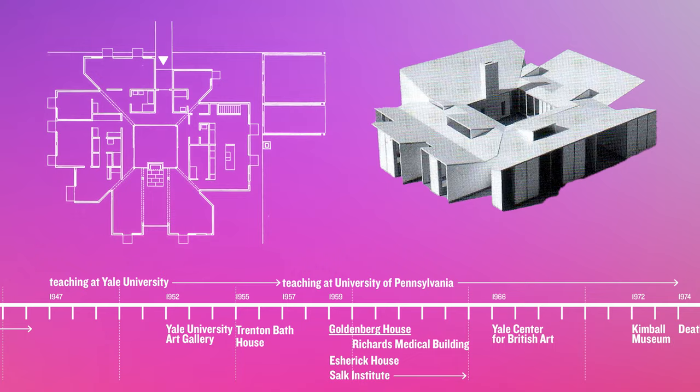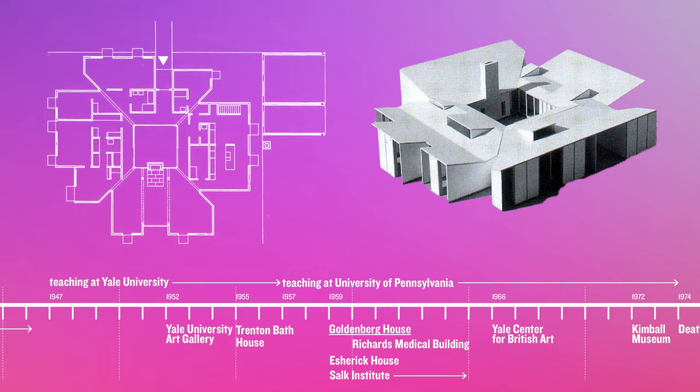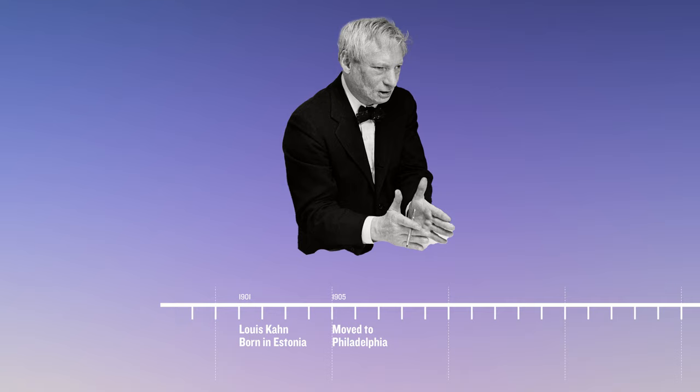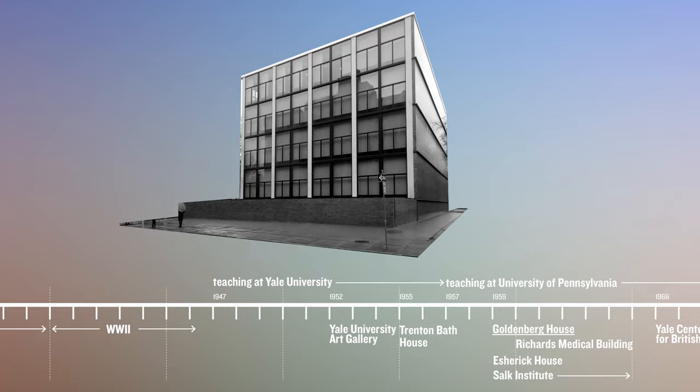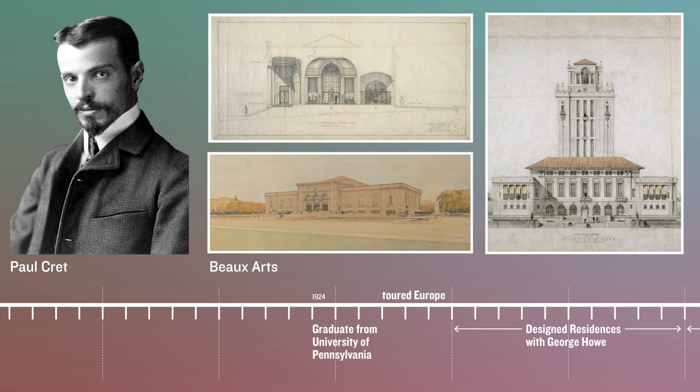The Goldenberg House was designed in 1959 by the architect Louis Kahn. Louis Kahn was born in Estonia in 1905 and moved to Philadelphia, Pennsylvania shortly after, where he would live for most of his life. He attended architecture school at the University of Pennsylvania, where he would end up teaching in 1957 following a stint at Yale, where he completed his first major commission of the University Art Gallery. In addition to his legacy of building, his impact as a teacher was an important chapter of his architectural contributions.